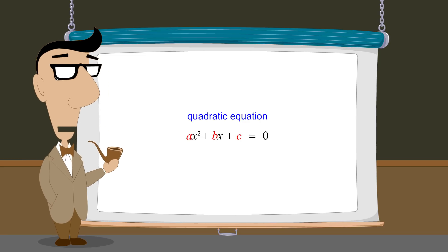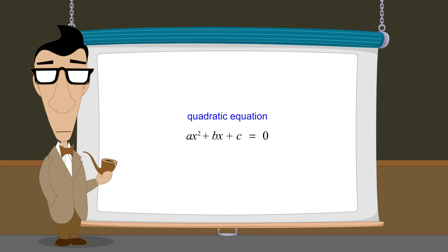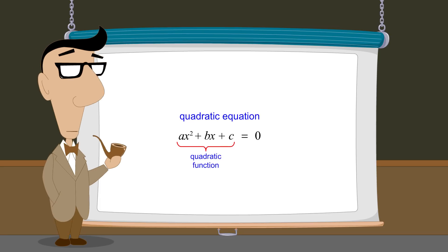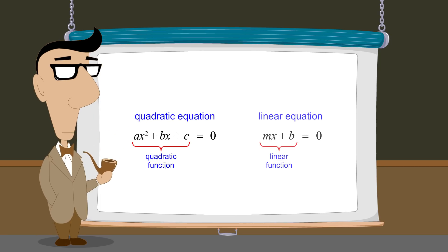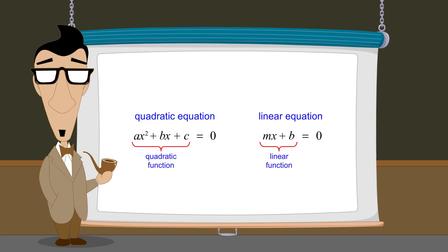where a, b, and c are constants. A quadratic equation like this is formed by setting a quadratic function equal to zero, in the same way that a linear equation can be formed by setting a linear function equal to zero.